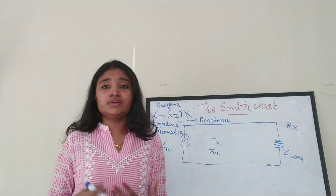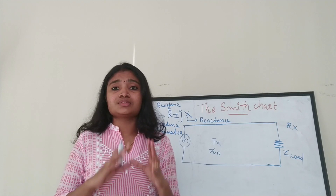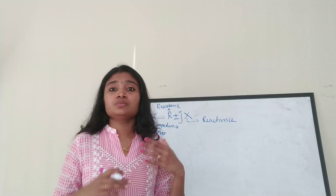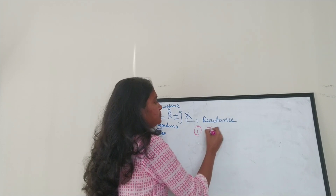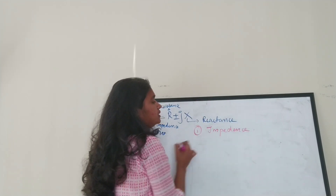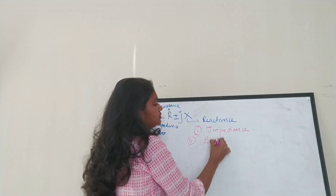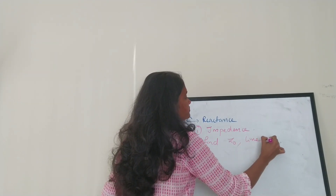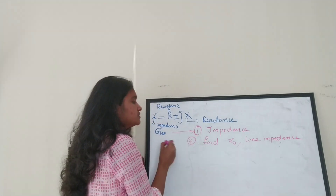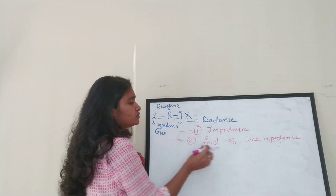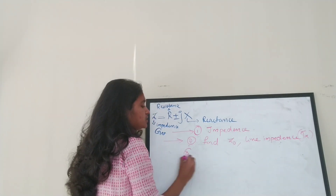We can plot both the real and imaginary parts of impedance on the Smith Chart. Before plotting, there are steps to follow. Step 1: your impedance is given. Step 2: find Z₀, the line impedance or transmission line impedance.